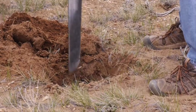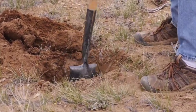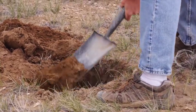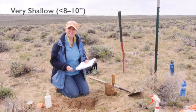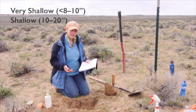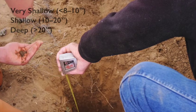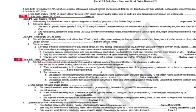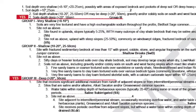The very first part of the key asks about soil depth — that's why it was important to dig a hole and understand what's in those subsurface layers. The first question is whether the soil is very shallow (less than 10 inches), shallow (10 to 20 inches), or deep. We dug past 20 inches, so we know we have at least a moderately deep to deep site.